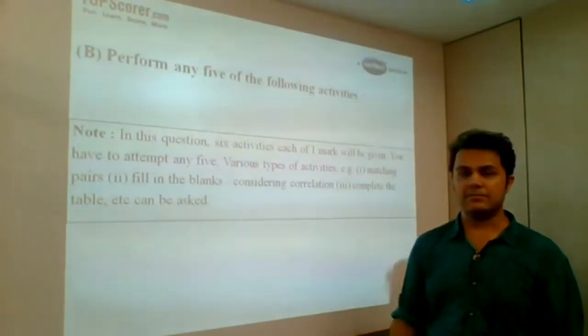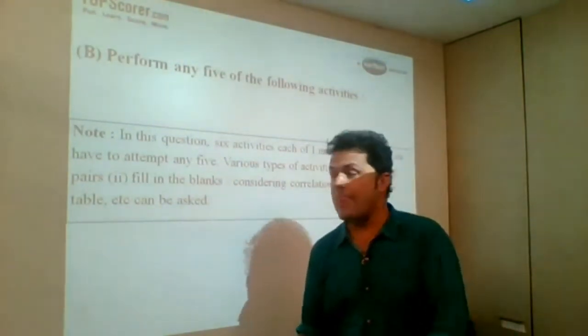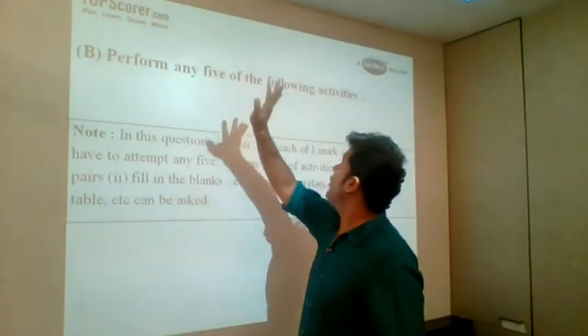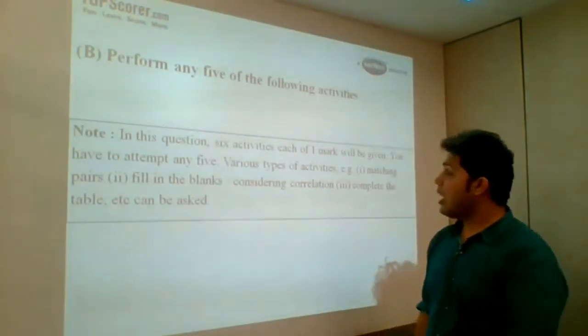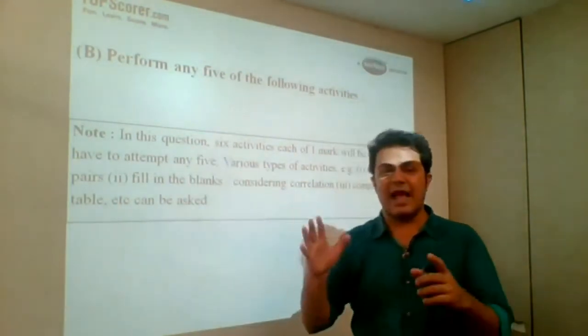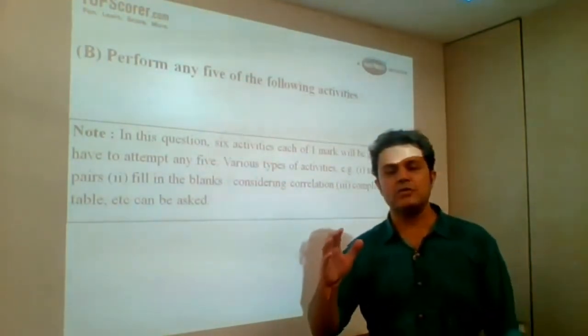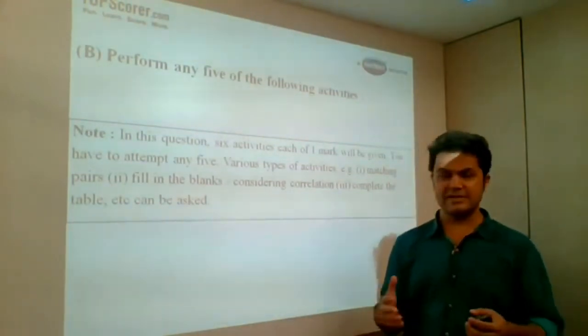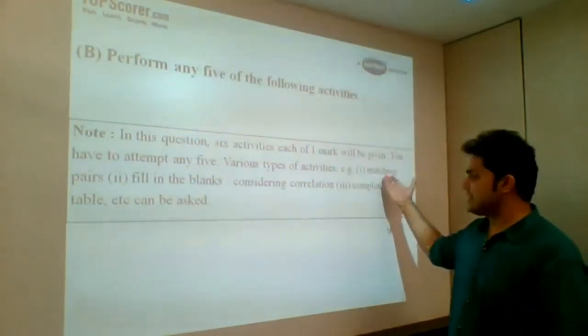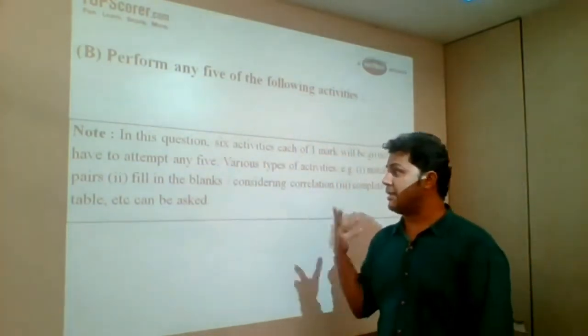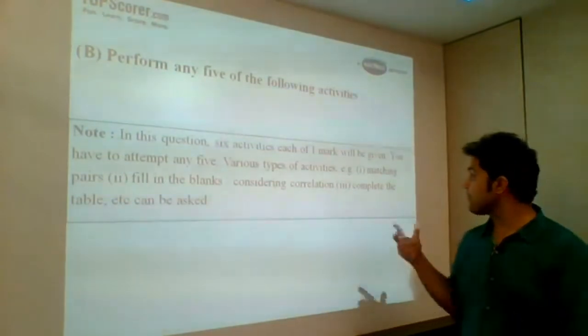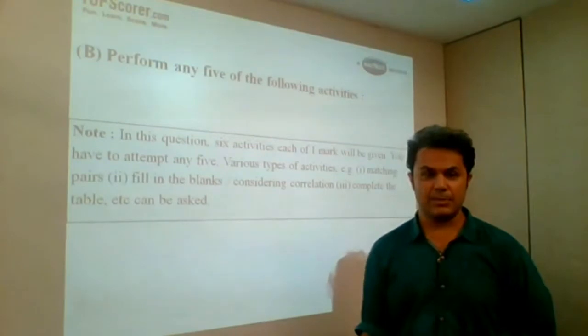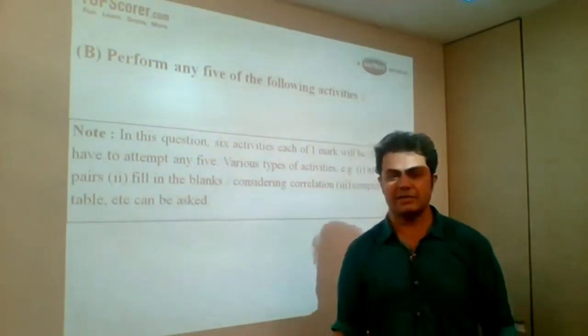Now let's understand question number 1B. Same as 5 MCQs in question 1A. The heading is perform any 5 of the following activities. In this question, 6 activities would be given to you, out of which you need to attempt any 5, each for 1 mark. They would be very simple, various type of activities. Examples: matching pairs, fill in the blanks, considering correlations, complete the table, etc. All such type of questions can be asked.